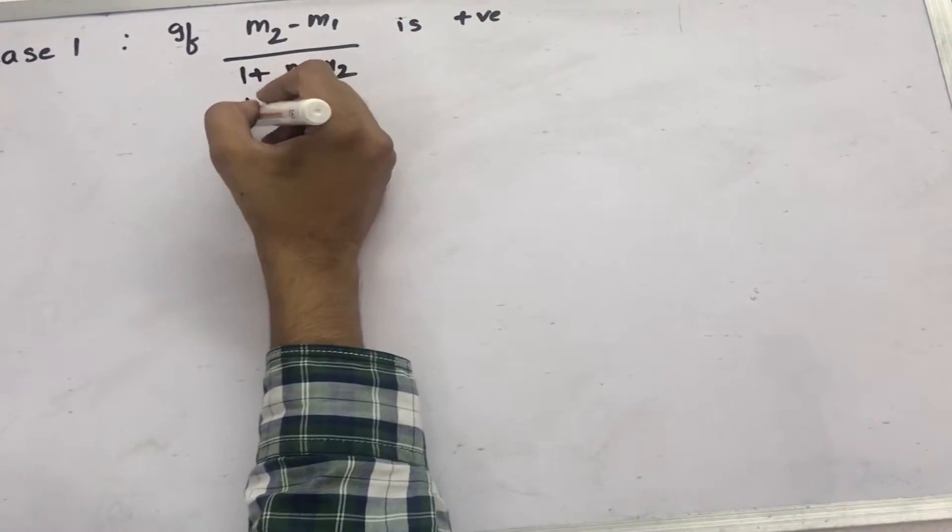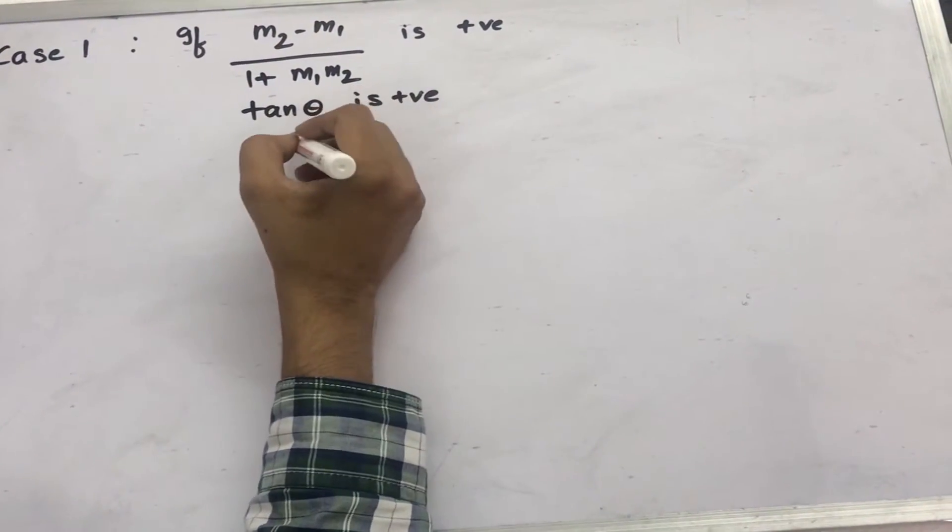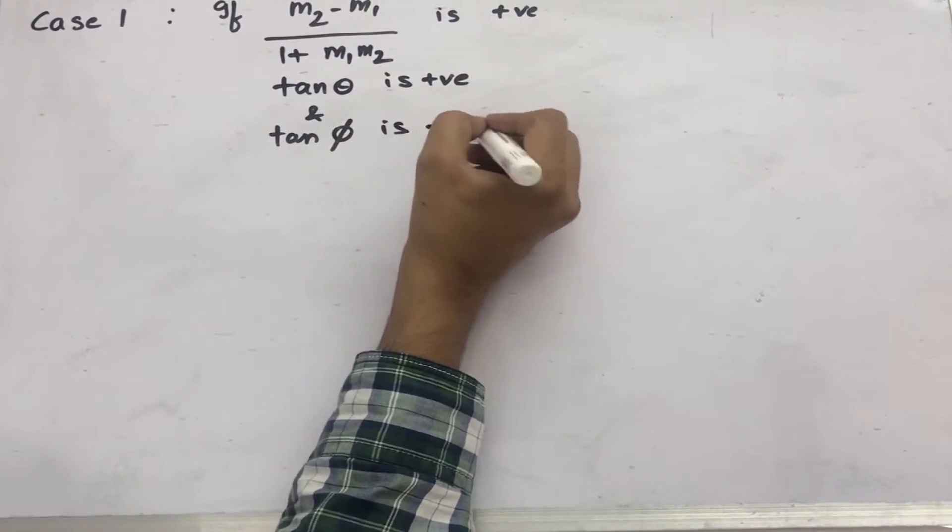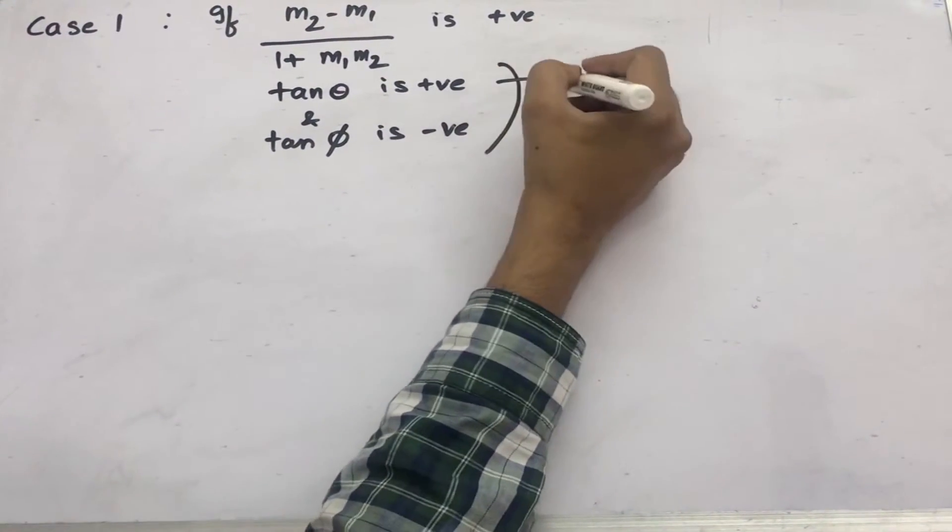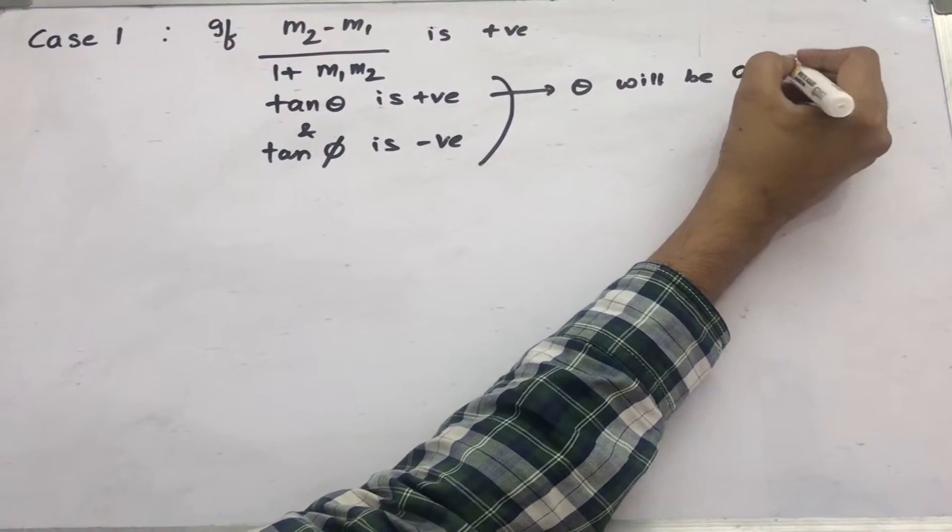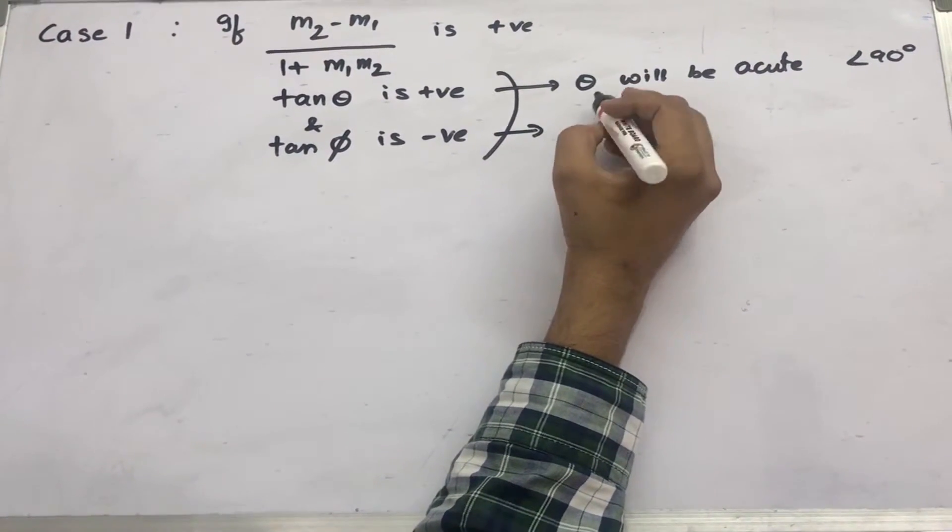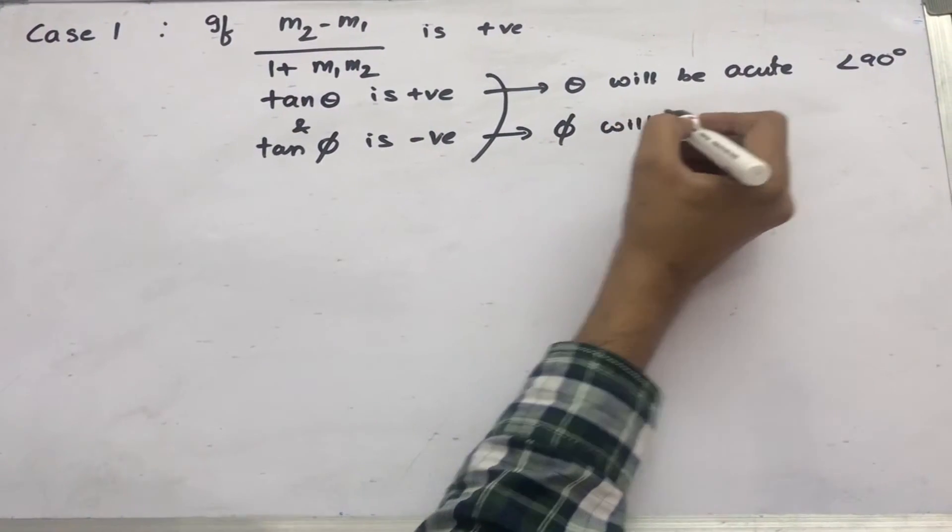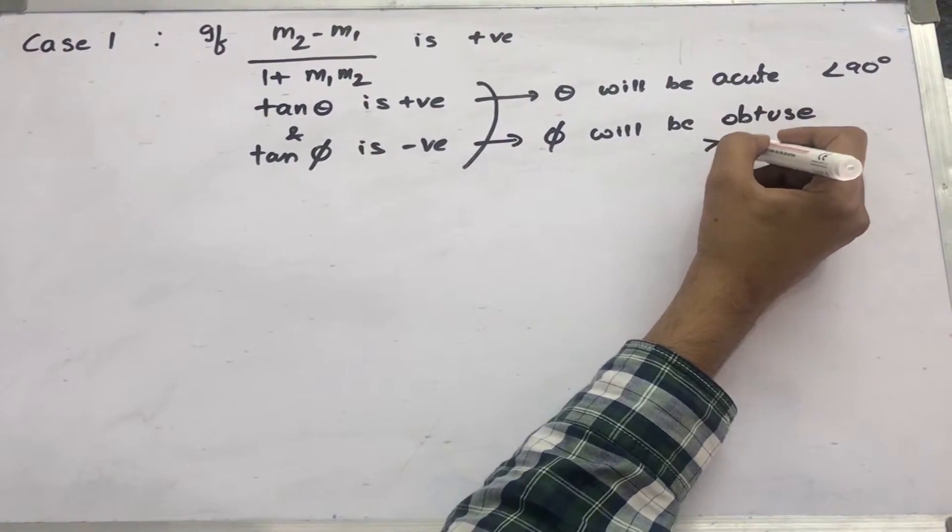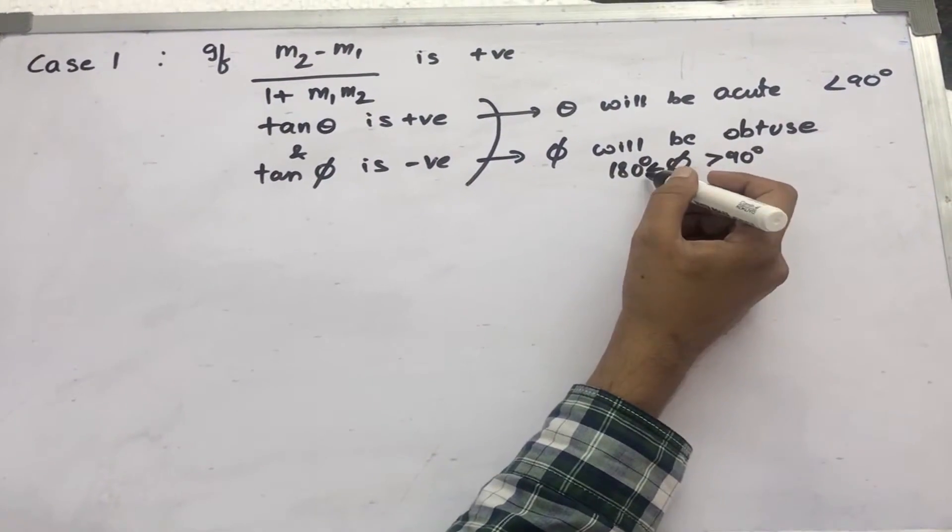then tan theta is positive and tan phi is negative. So theta will be acute, that is less than 90 degrees, and phi will be obtuse, that is greater than 90 degrees and less than 180 degrees.